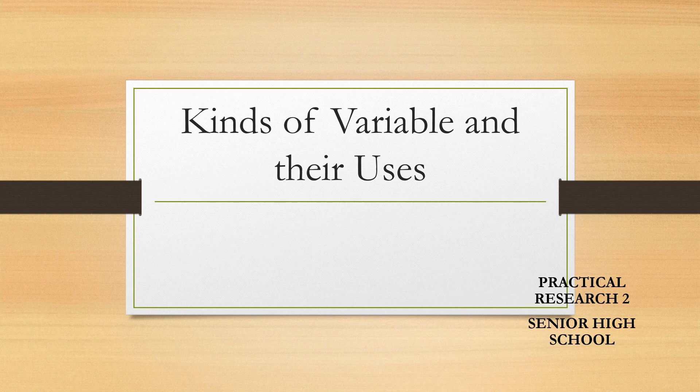Good day again. We are now in week 3, module 3 of our subject Practical Research 2. Today we're going to discuss the kinds of variables and their uses. Prior to writing a research problem statement and hypothesis, every researcher must have a group of variables. It's very important that we know who will become our variable — those that we will study, question, or be the focus of our research.